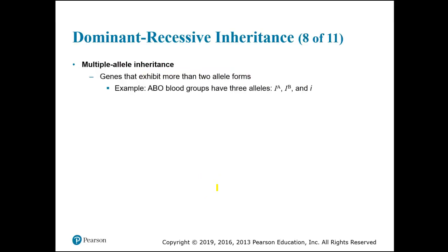Multiple allele inheritance is when a trait has more than two alleles — more than two versions. But multiple alleles does not mean a person inherits more than two alleles. A person can only inherit two alleles for any trait because they only have two parents — one allele for a trait from your mom and one from your dad.